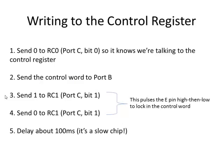Writing to the control register: send a 0 out RC0 so the chip knows we're talking to the control register — that's the register select pin. Send the control word to port B. Then send a 1 to RC1, which is the enable pin, followed by a 0 to make a high-to-low transition — that pulse locks in the control word. Then wait about 100 milliseconds before doing anything else.